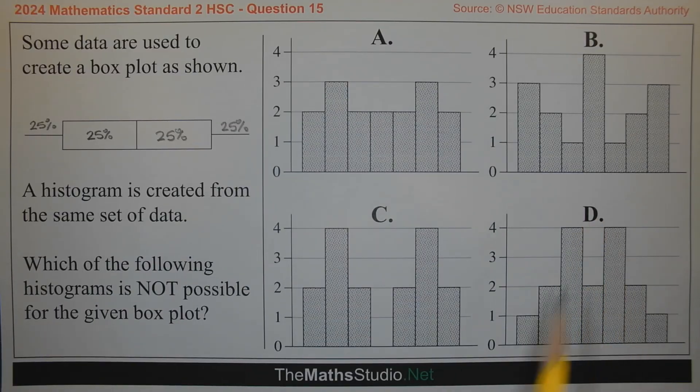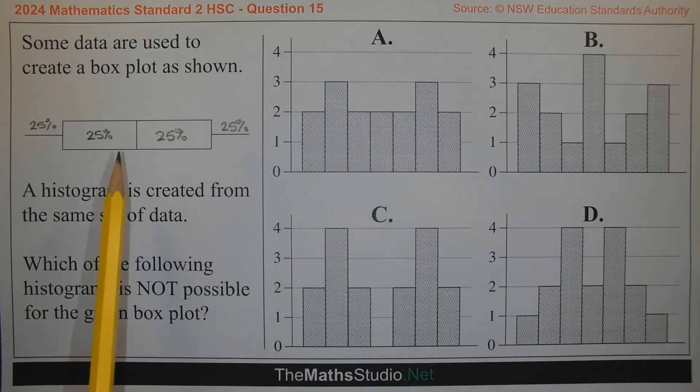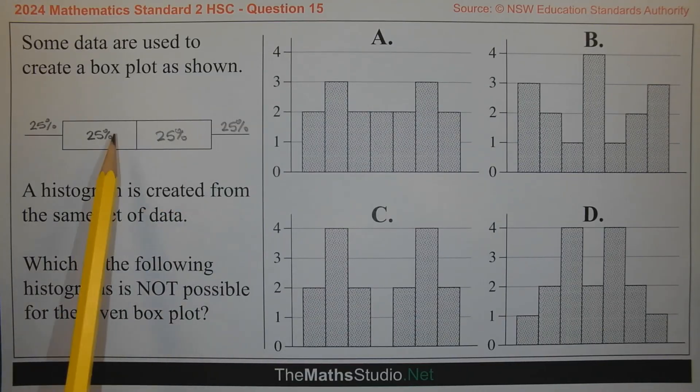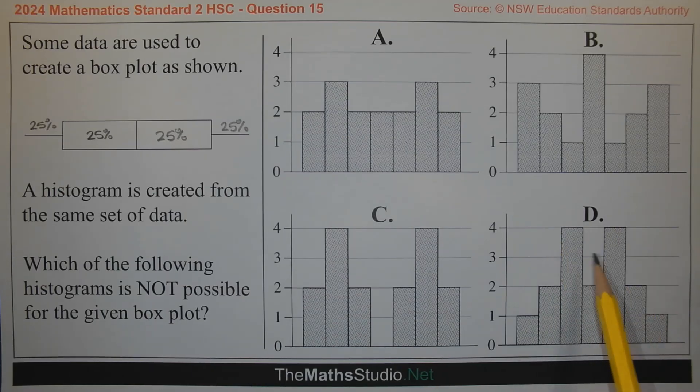However, with option D we can see a concentration of data in the center. So with option D, this histogram implies the tails are quite long but the box component is quite narrow. Therefore, the histogram in option D is not possible for the given box plot.